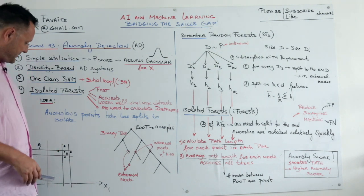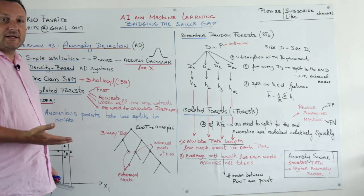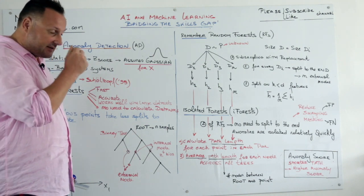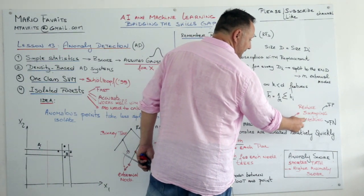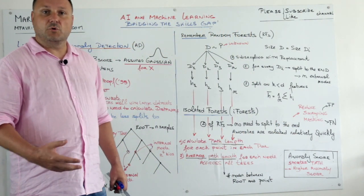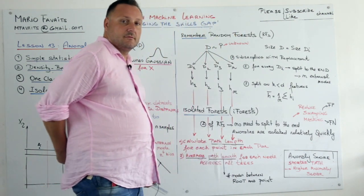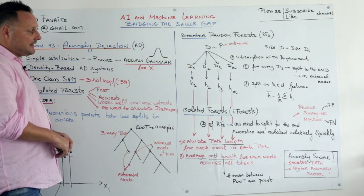Well, because we just said that anomalous points are isolated a lot faster than normal points. So you could actually set a limit on how deep you want to go with the tree. This will help with what we call reduce swamping and masking. These are two fancy words for false positives and false negatives.